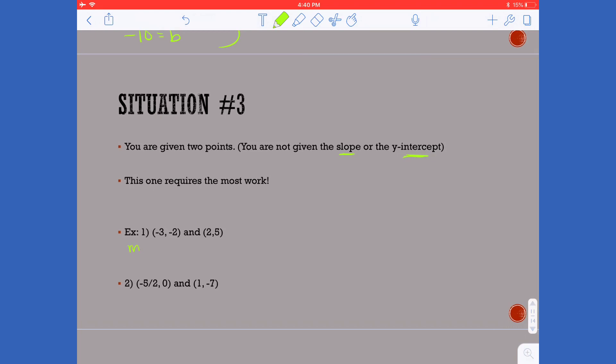So in order to find my slope I need to take y2 and subtract it from y1 and then over x2 subtract it from x1. So that's going to be 5 minus a negative 2 all over 2 minus a negative 3 which ends up giving me 7 over 5.